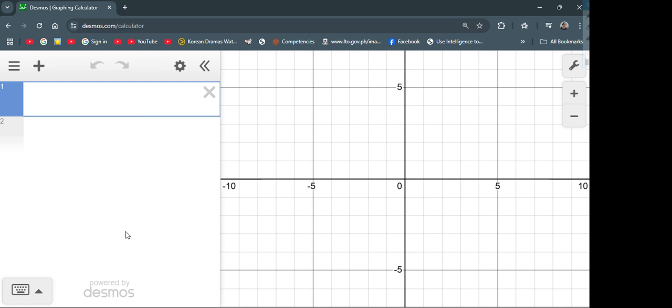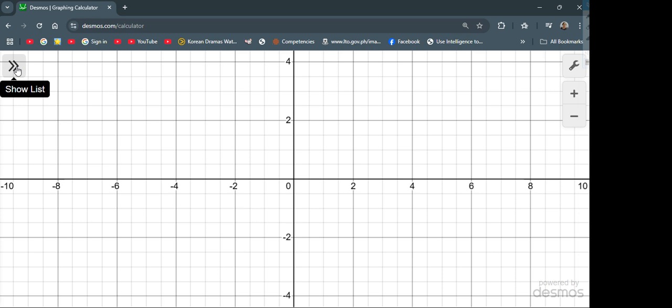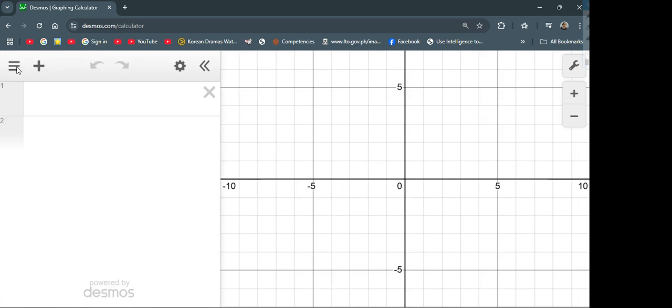First, you're going to open your tab to Desmos.com and find the graphing calculator. Once you are there, click on the show list, where you'll see numbers 1, 2, and so on. Then click on number 1.